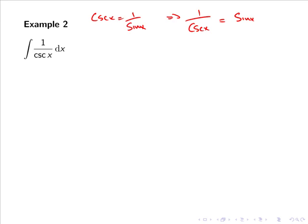Hence the integral of 1 over cos x dx can be written as the integral of sin x dx, and integrating sin x gives minus cos x plus c.